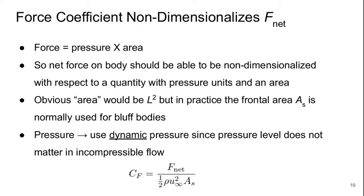The choice of reference area is, at the end of the day, arbitrary. As long as you know what it is, you can convert to a different form of the force coefficient that uses a different reference area without any difficulty. For pressure, the non-dimensionalizing scale is the dynamic pressure, since the pressure level does not matter in incompressible flow. So in this case, the force coefficient Cf is the net force over one-half rho u infinity squared times As.